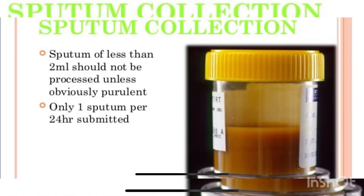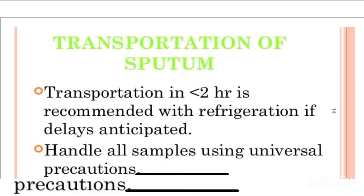The sputum collected should not be less than 2 ml, and only one sputum sample will be tested per 24 hours, as the sample can deteriorate. Transportation of the sample should occur within 2 hours, or with refrigeration. Immediate testing is really recommended, otherwise results may be difficult. Handle all samples with universal precautions, because these respiratory tract infections may involve COVID, asthma, or even lung cancer, so we have to be very cautious while doing the test.